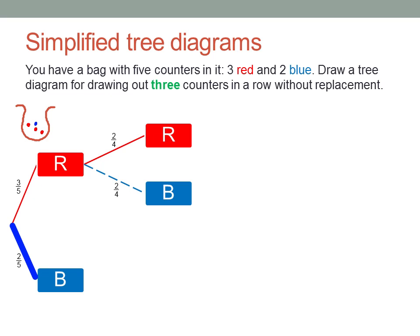Okay, so what about if the first counter was blue? Then the second could be red or blue, and there are three red counters left out of four, but only one blue left out of four.